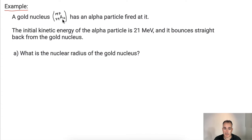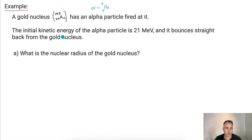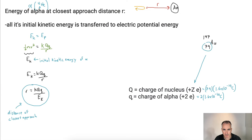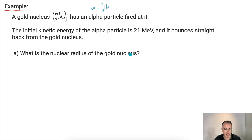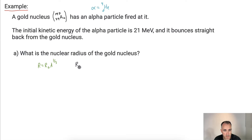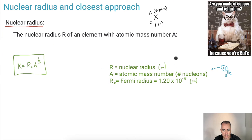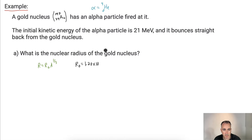In this example, we have a gold nucleus — gold-197 — and an alpha particle fired at it. An alpha particle is helium-4. The initial kinetic energy of the alpha particle is 21 mega electron volts, and it bounces straight back from the gold nucleus. Step one: find the nuclear radius of the gold nucleus. We need R equals R₀ times A to the one third, and R₀ is 1.20 times 10 to the minus 15 meters.